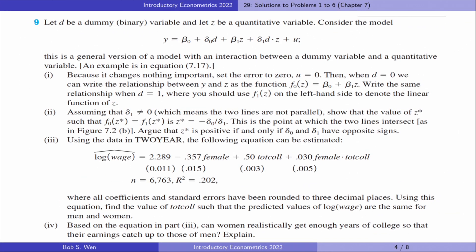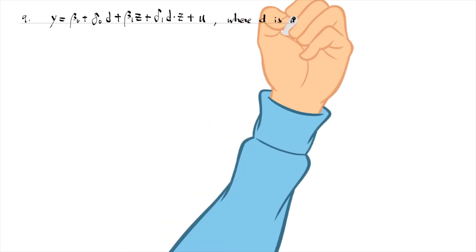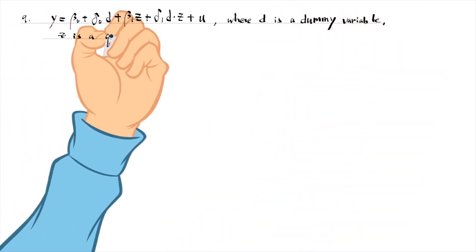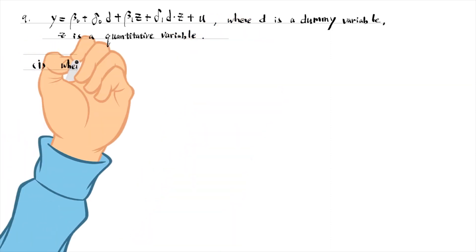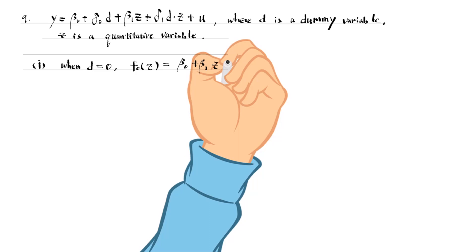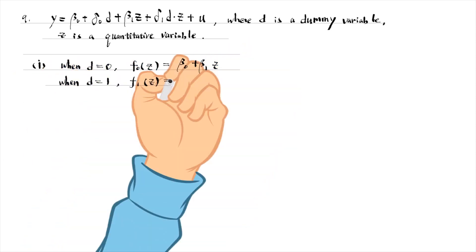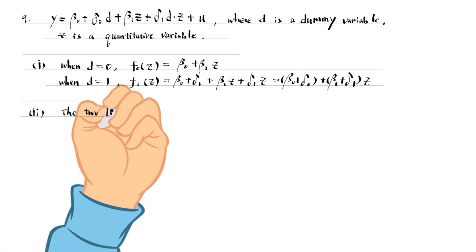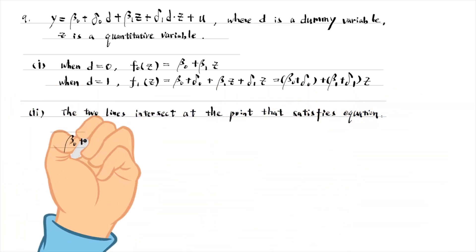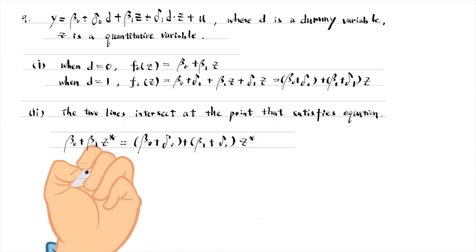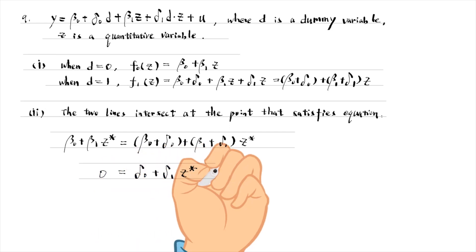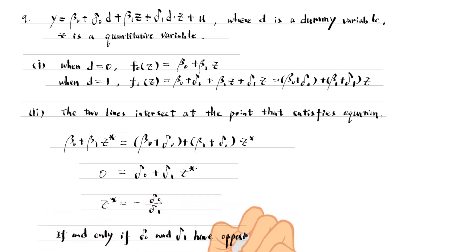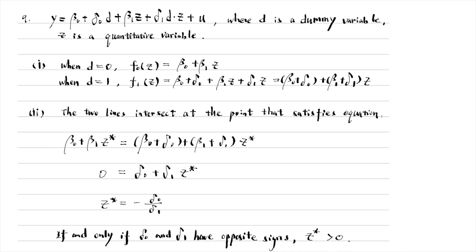Let's find answers to problem number 9. The outcome variable y is a linear function of d and z, where d is a dummy variable and z is a quantitative variable. When d equals 0, f(z) equals beta 0 plus beta 1 times z. When d equals 1, f(z) equals beta 0 plus delta 0 plus beta 1 plus delta 1 times z. The two lines intersect at the point that satisfies the equation. We can solve it and z star equals minus delta 0 over delta 1. If and only if delta 0 and delta 1 have opposite signs, z star is positive.